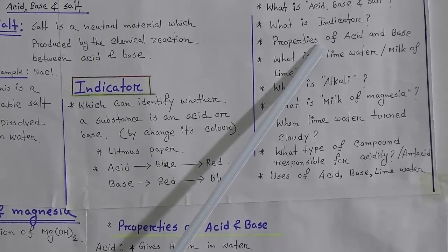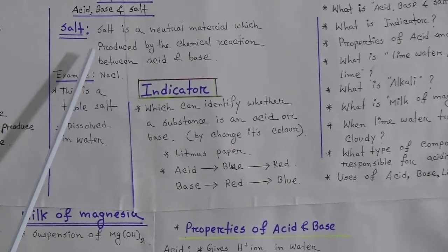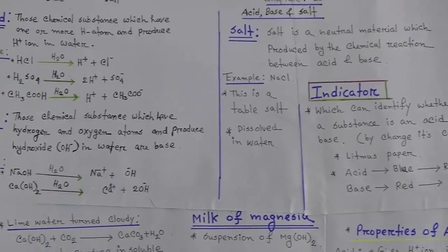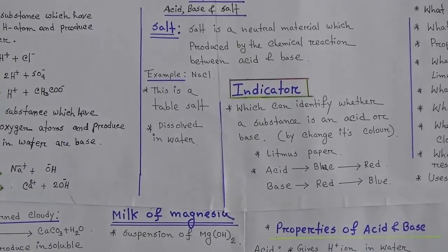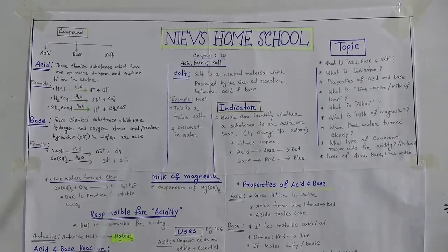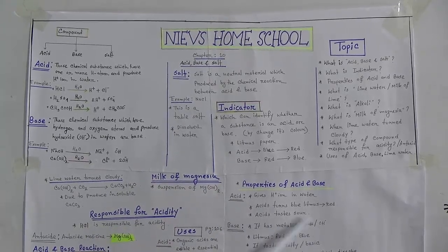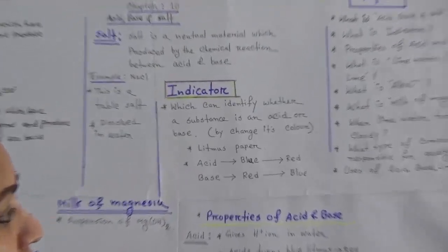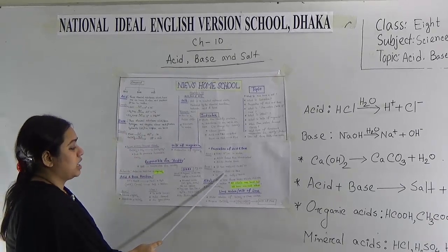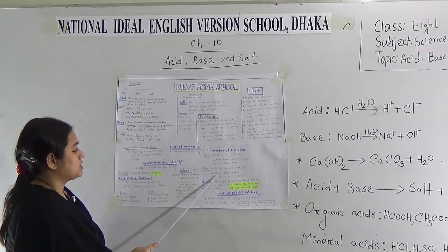Now we have to learn the properties of acid and base. Acid gives hydrogen ions in water. Acid turns blue litmus to red litmus. A new property of acid is that acid tastes sour. Now the properties of base: base has metallic oxide or hydroxide. Base turns red litmus paper to blue. It tastes bitter. These are the properties of base.